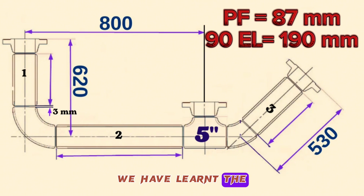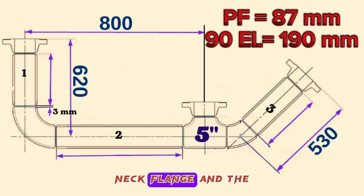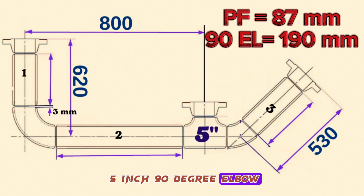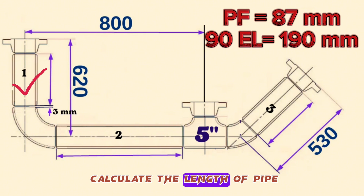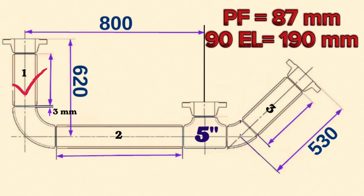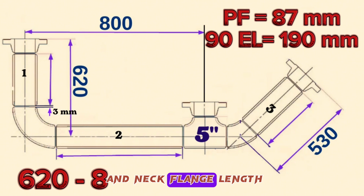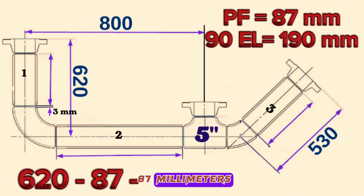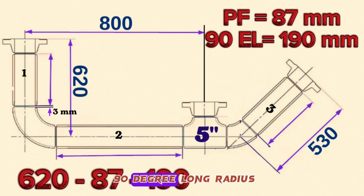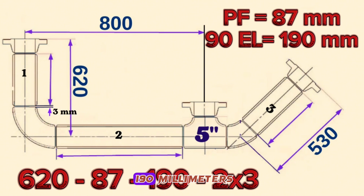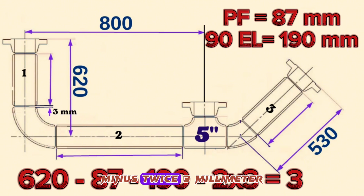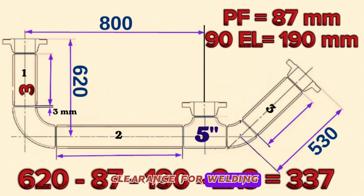We have learned the lengths of the 5-inch weld neck flange and the 5-inch 90-degree elbow, and now we can calculate the length of pipe piece Item 1. Overall length 620 mm, minus 5-inch weld neck flange length 87 mm, minus 5-inch 90-degree long radius butt weld elbow 190 mm, minus twice 3 mm clearance for welding, equals 337 millimeters.